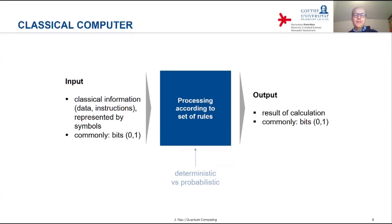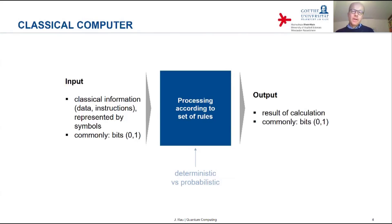The typical computer that you can buy in the store — your laptop — is, as far as the hardware is concerned, a deterministic machine, even though there exist algorithms which on purpose introduce randomness, like the Monte Carlo algorithm. But the underlying hardware in general is working in a deterministic fashion, if you neglect errors which may always occur with a certain probability. The ideal machine runs deterministically.